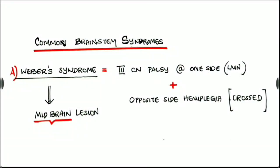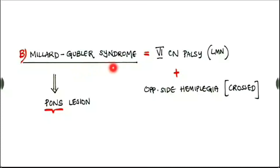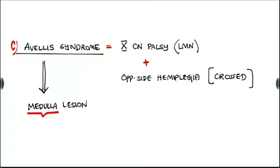A few words about the common brainstem syndromes. These brainstem syndromes cause contralateral hemiplegia — depending on the site of the lesion, that cranial nerve has LMN palsy with the opposite side hemiplegia of the body. First, Weber syndrome with the lesion in the midbrain causes third cranial nerve LMN palsy on one side and opposite side hemiplegia — known as crossed hemiplegia. Second, Millard-Gubler syndrome, a lesion at the pons, causes sixth cranial nerve LMN palsy with opposite side hemiplegia — again crossed hemiplegia. Finally, Avellis syndrome with the lesion in the medulla causes tenth cranial nerve LMN palsy with opposite side hemiplegia. Thus, any lesion in the brainstem results in crossed hemiplegia, whereas any lesion above the brainstem comes under ipsilateral hemiplegia.